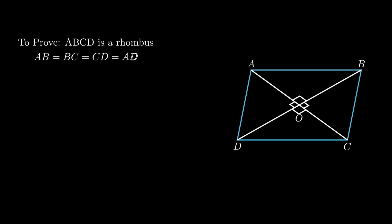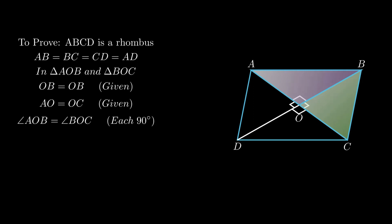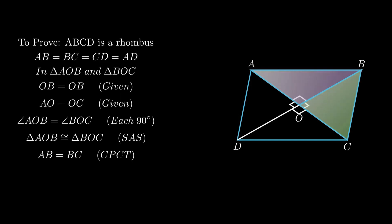To prove AB = BC, consider triangle AOB and triangle BOC. OB is common, so OB = OB. Since the diagonals bisect each other, AO = OC. Also angle AOB = angle BOC = 90 degrees. By the side-angle-side rule, triangle AOB is congruent to triangle BOC. By corresponding parts of congruent triangles, AB = BC.